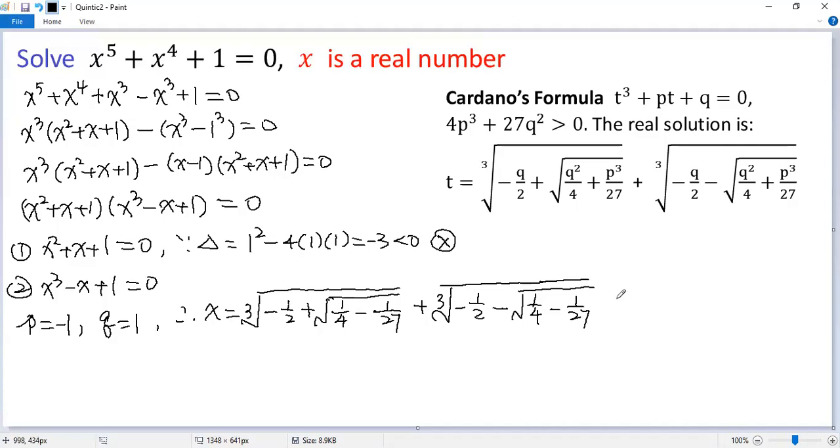That is the exact solution to the given equation. The approximate value would be negative 1.3247. If you like this video, please subscribe. Thank you.